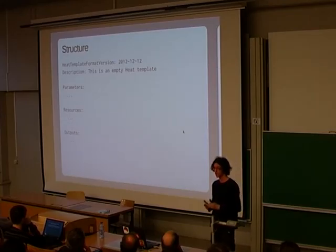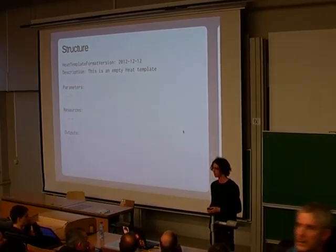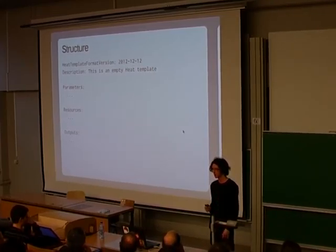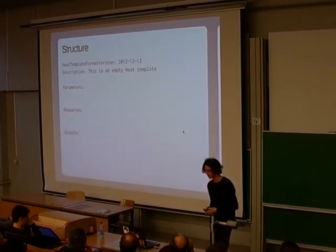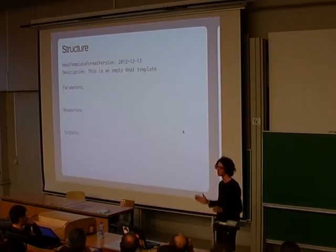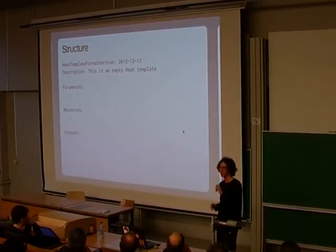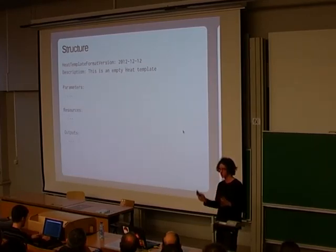Parameters are things you don't want hard-coded or can't hard-code, such as the Nova SSH key pair name you're going to use to SSH into the instance, or if you want the Nova flavor parameterized so you can use the same template for smaller or larger instances — you put that in the parameters and reference it. Resources are the main section, where you actually describe all the OpenStack resources that are going to be created: virtual machines, databases, Quantum networks, subnets, floating IPs, and all the associations you need.